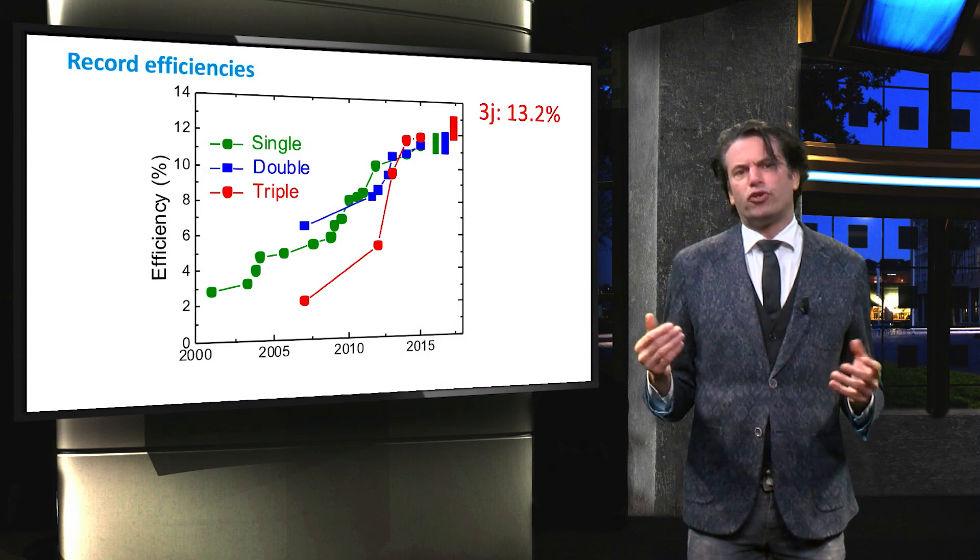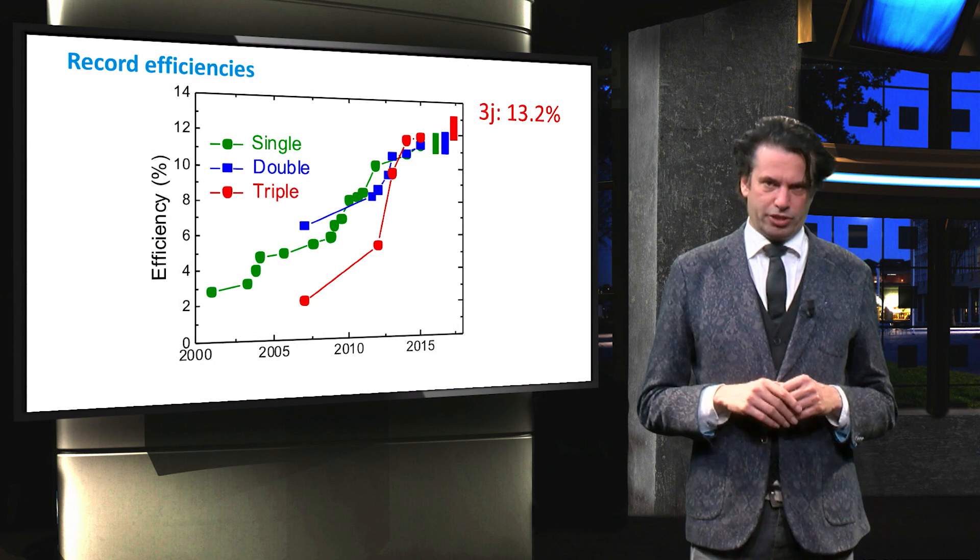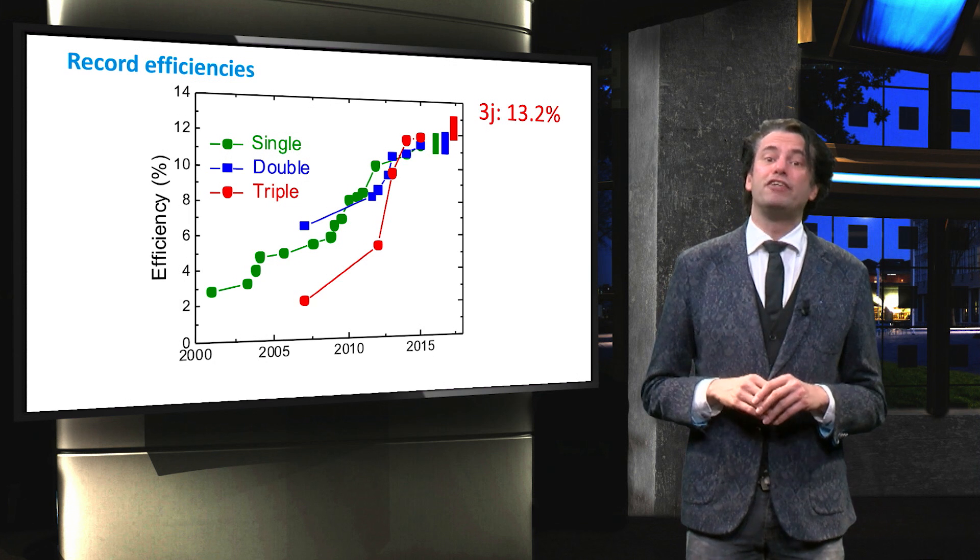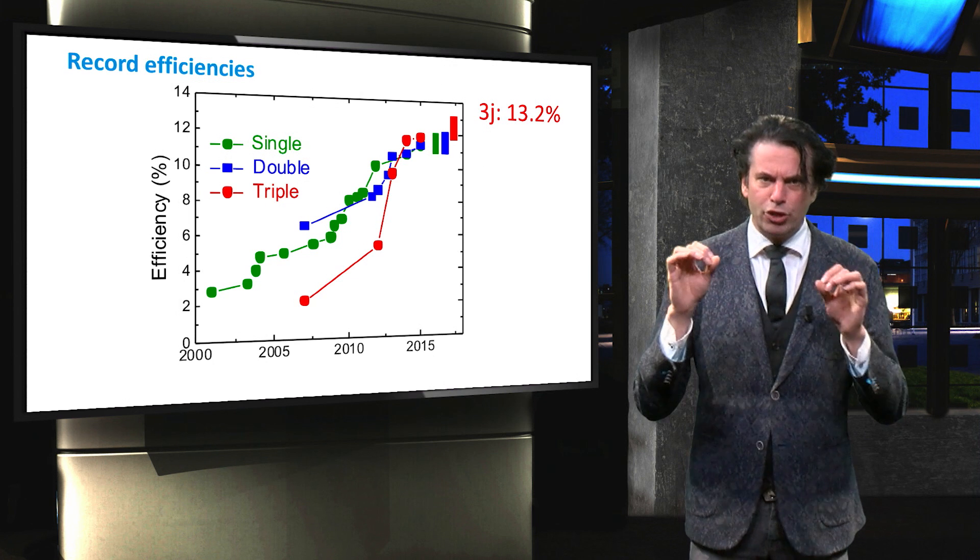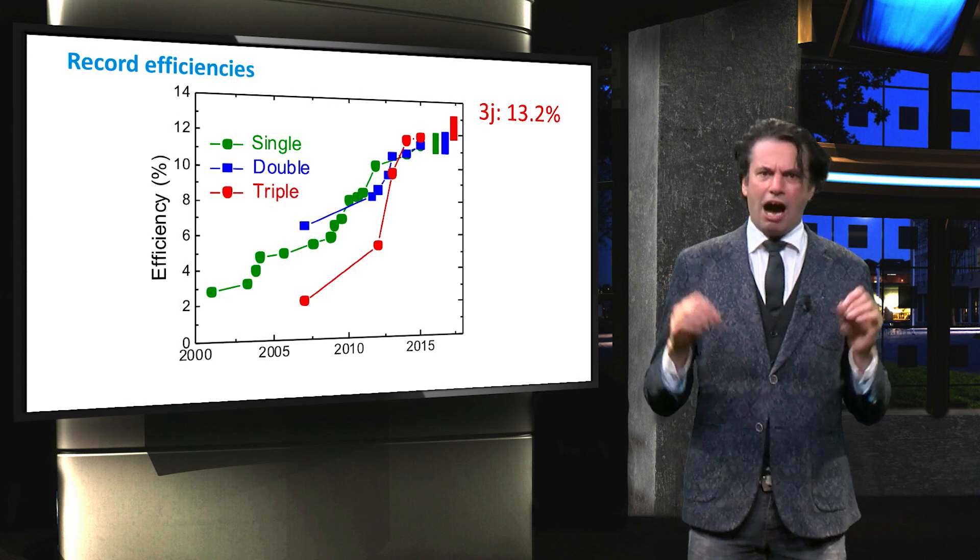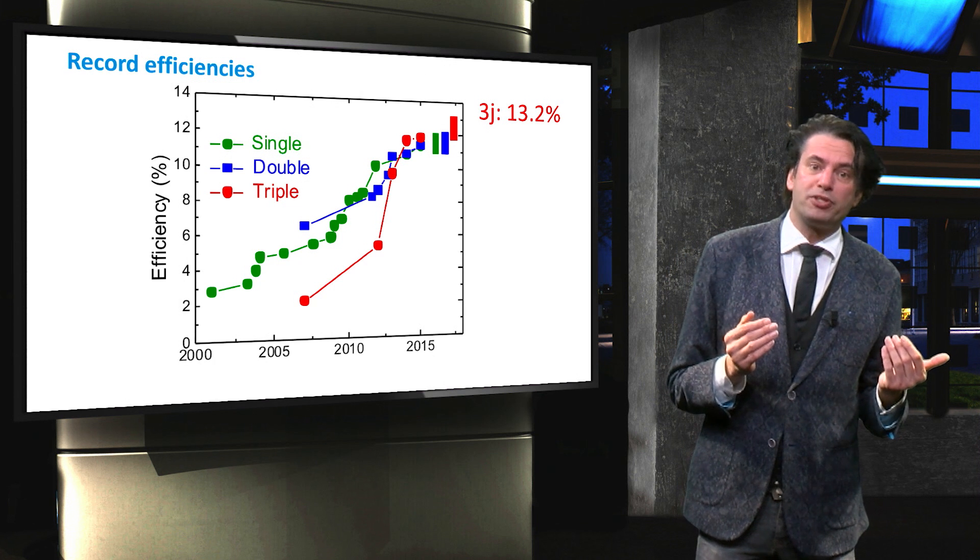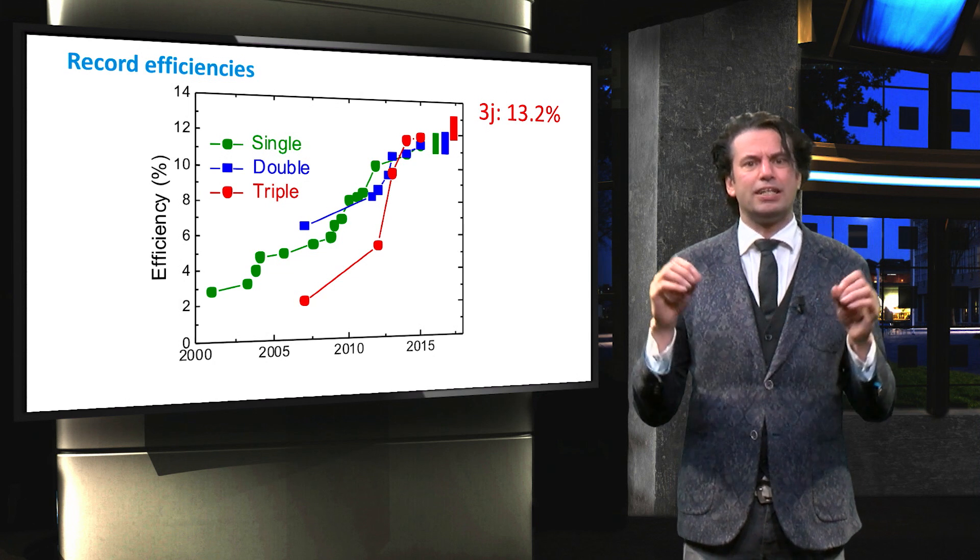The evolution of performance of the organic triple PV devices has surpassed the single and tandem organic cells. Currently, the company Heliatek in Germany claims to have achieved a conversion efficiency of up to 13.2% using a triple junction architecture. However, the difference in performance between the triple junction of 13.2% and the record single junction of 12.1% is still marginal.